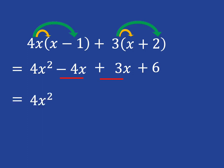When we simplify, the 4x squared is going to stay there. Then minus 4x plus 3x is minus x, and then the plus 6 is just going to stay there.